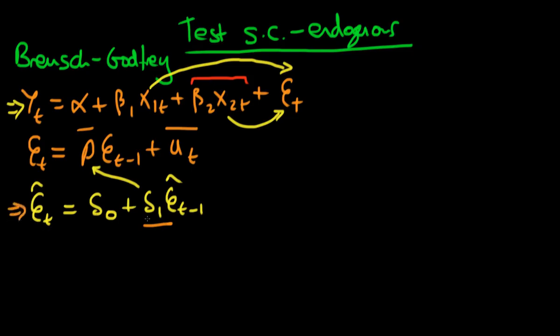Any statistics based on that biased estimate — the t-statistic, the F-statistic — are all going to be biased. So we need to think about a way to correct this auxiliary regression to take this into account.